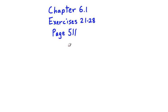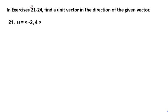Chapter 6.1, Exercises 21-28, page 511. This is our section on vectors, and this set of exercises relates to unit vectors. A unit vector is a vector that has a magnitude of 1 in a given direction of the original vector.